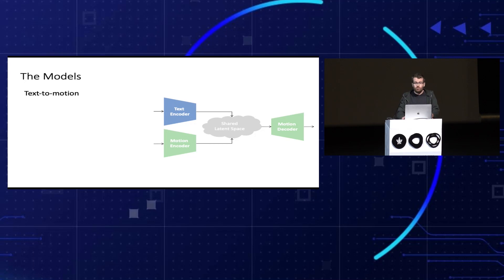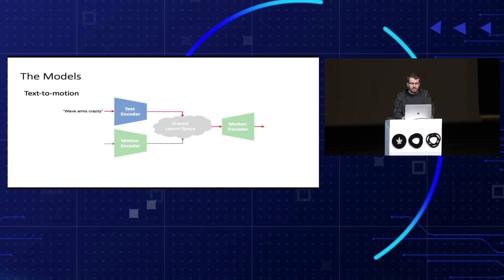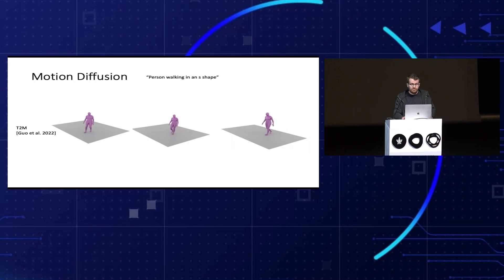The problem of text to motion was mainly tackled by a framework also seen in three papers from last year, one of them by our team. The general approach was learning a shared latent space for text and motion, then at inference encoding text and decoding motion. The main issue with this approach is the lack of diversity. Although there is some diversity in the state of the art model, it is very limited.